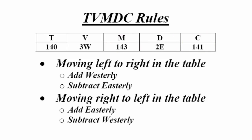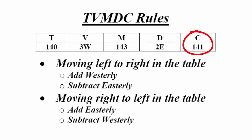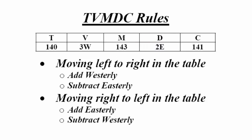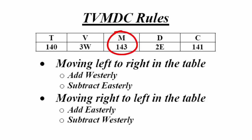Do the reverse when moving from right to left in the table. For example, to convert compass to magnetic — right to left — add the 2 east deviation to 141 compass as follows: 141 compass plus 2 east equals 143 magnetic. And to convert magnetic to true, also right to left, subtract the 3 west variation from the 143 magnetic as follows: 143 magnetic minus 3 west equals 140 true.